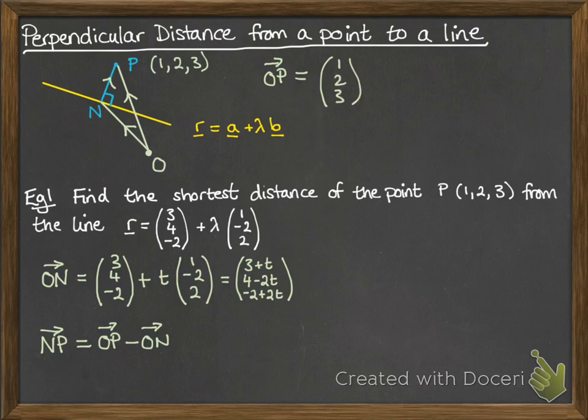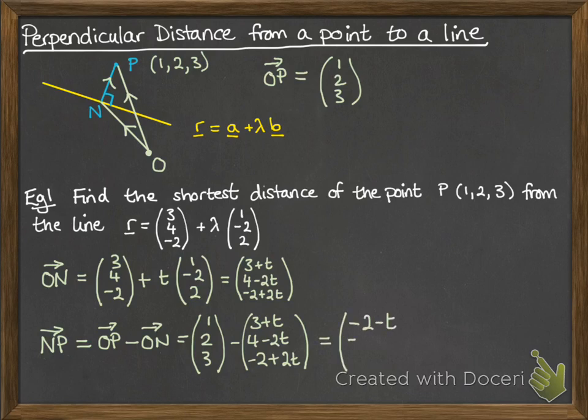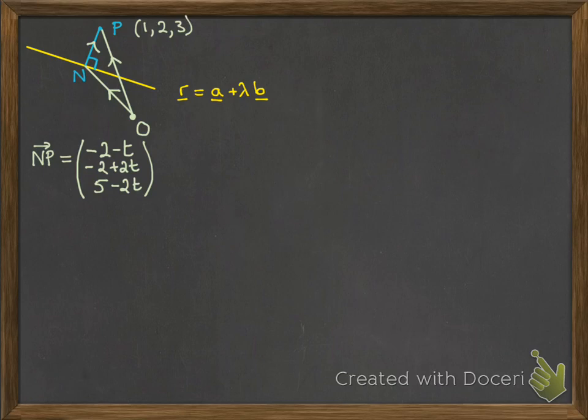OK, now OP is the vector (1, 2, 3). So OP minus ON looks like this. And we can put that together. So we now have NP in terms of T. Now this isn't all going to fit onto the one slide, so I'm just going to copy that across to the next one.